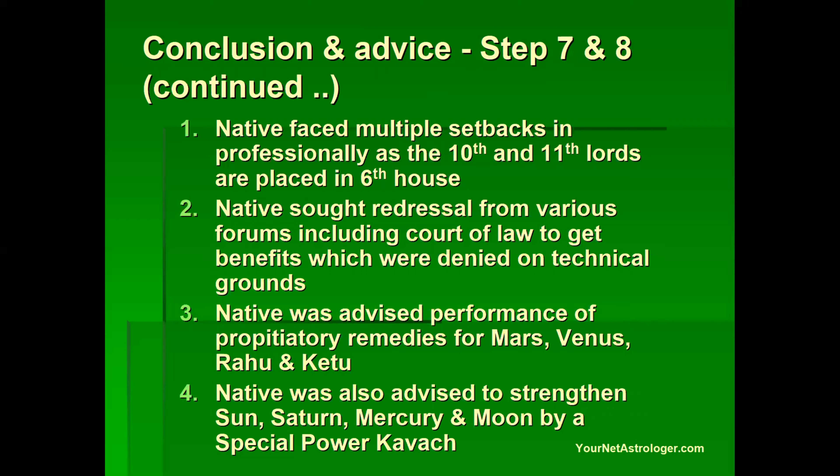He was advised the remedies performance for the functional malefic planets that is Mars, Venus, Rahu and Ketu. He was also advised to strengthen his benefic planets, especially Saturn, Sun, Mercury and Moon by a special power kavach to get success in the matters of litigation. Because Saturn is placed in 6th house as the weakest planet of the chart, success in litigations is ensured only with strengthening of Saturn and Sun and regular performance of the remedial measures. This is how we synthesize the analysis and advise the person.